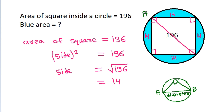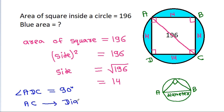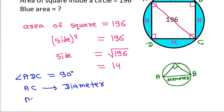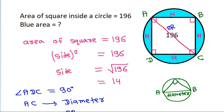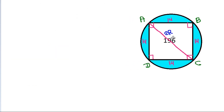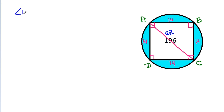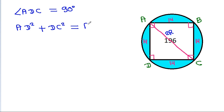So here, suppose it is AB and CD, then angle ADC is 90 degrees, so AC will be the diameter. Therefore, AC will be equal to 2R. And now, since angle ADC is 90 degrees, by the Pythagorean theorem, AD squared plus DC squared will be equal to AC squared.